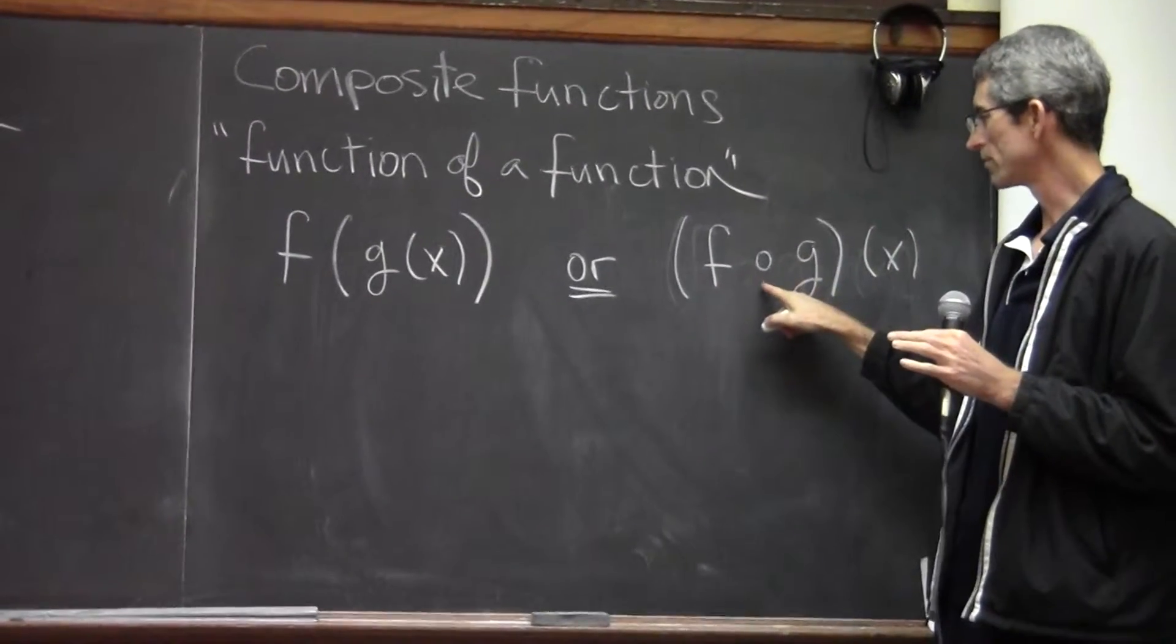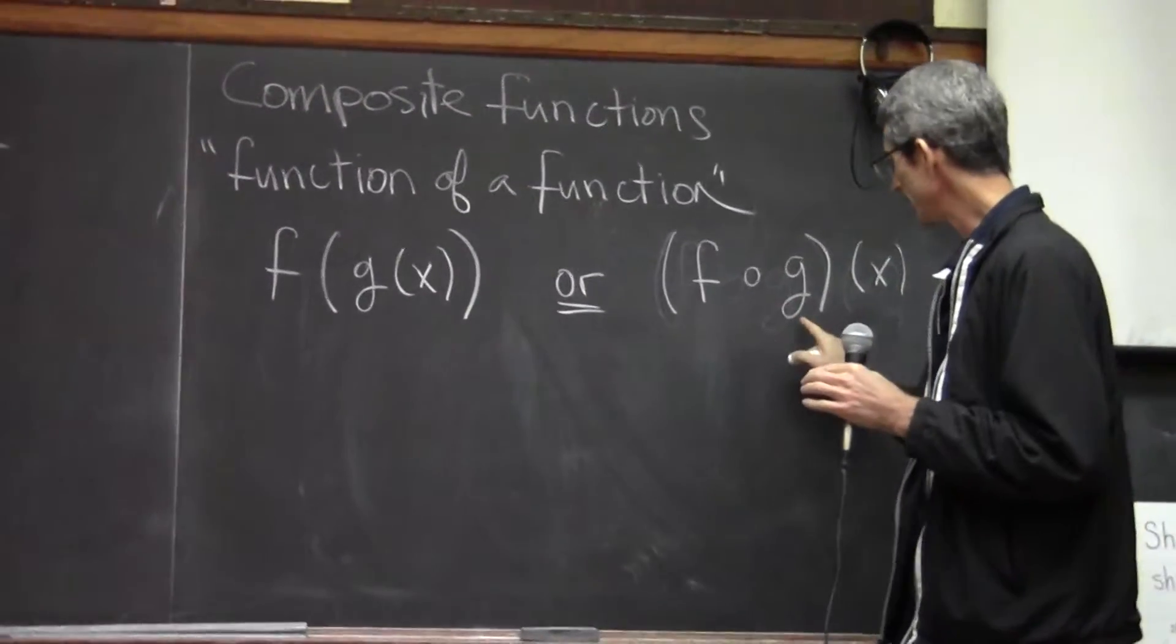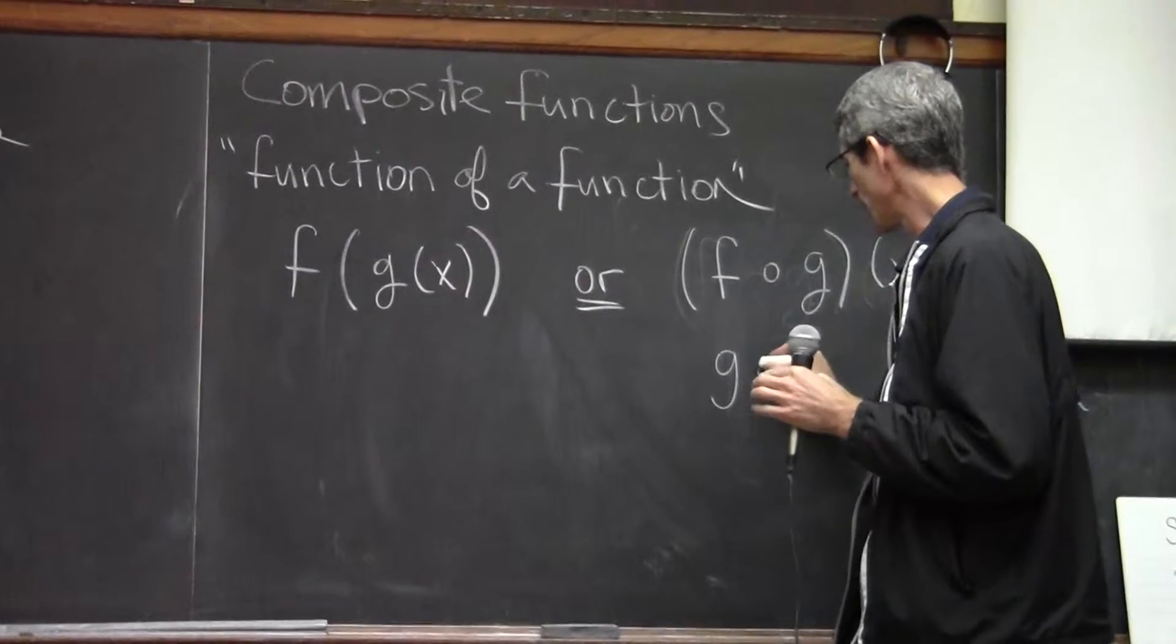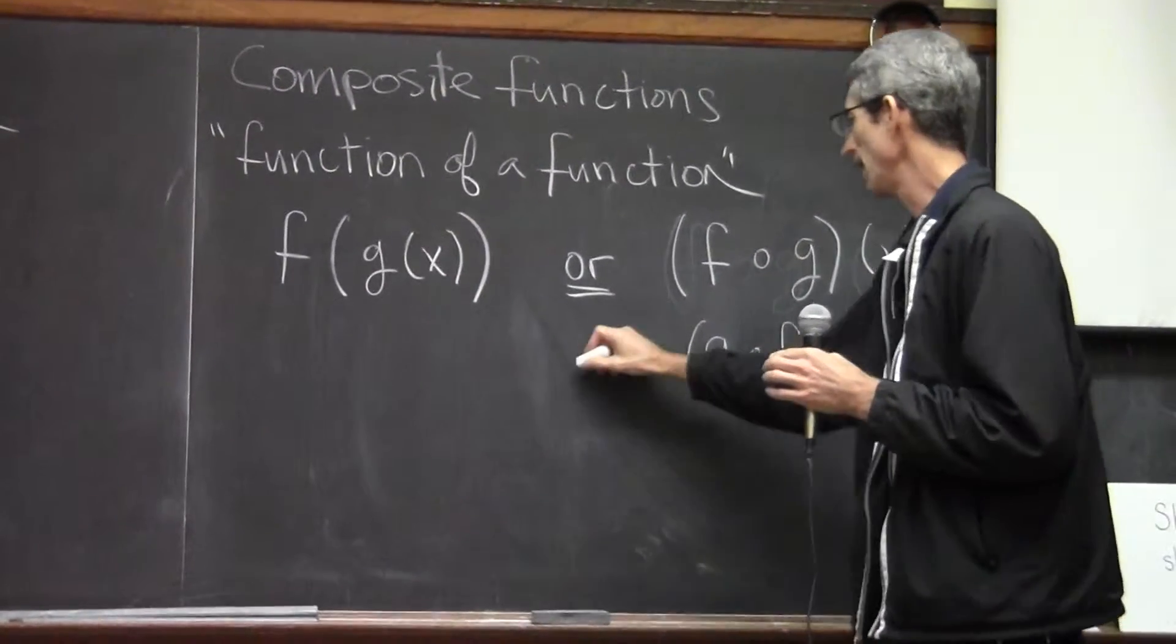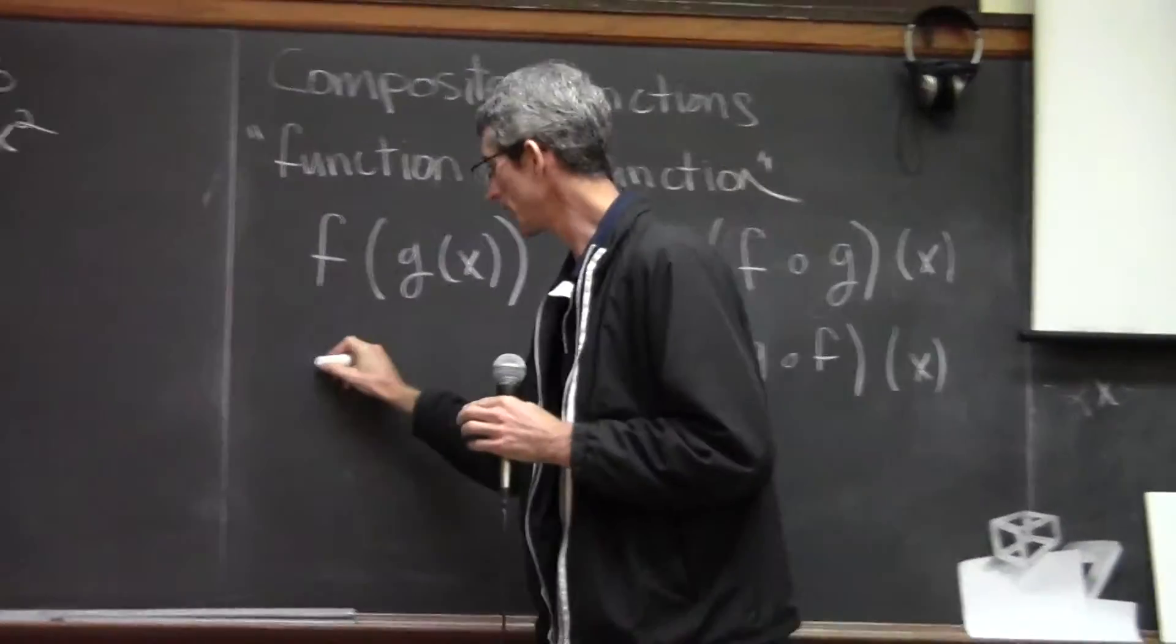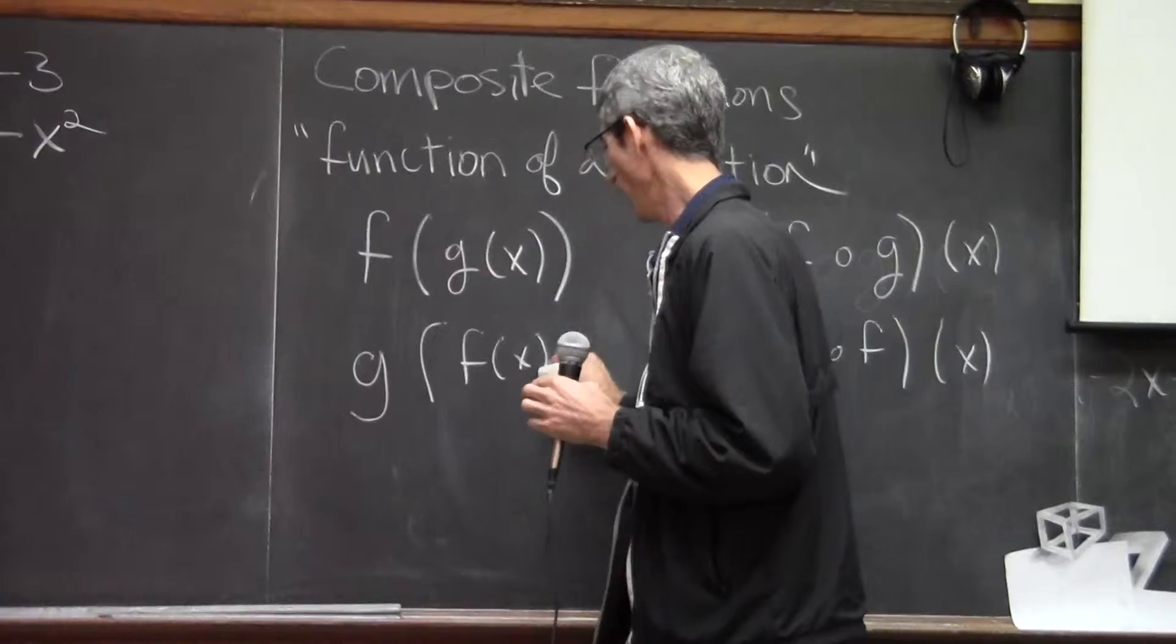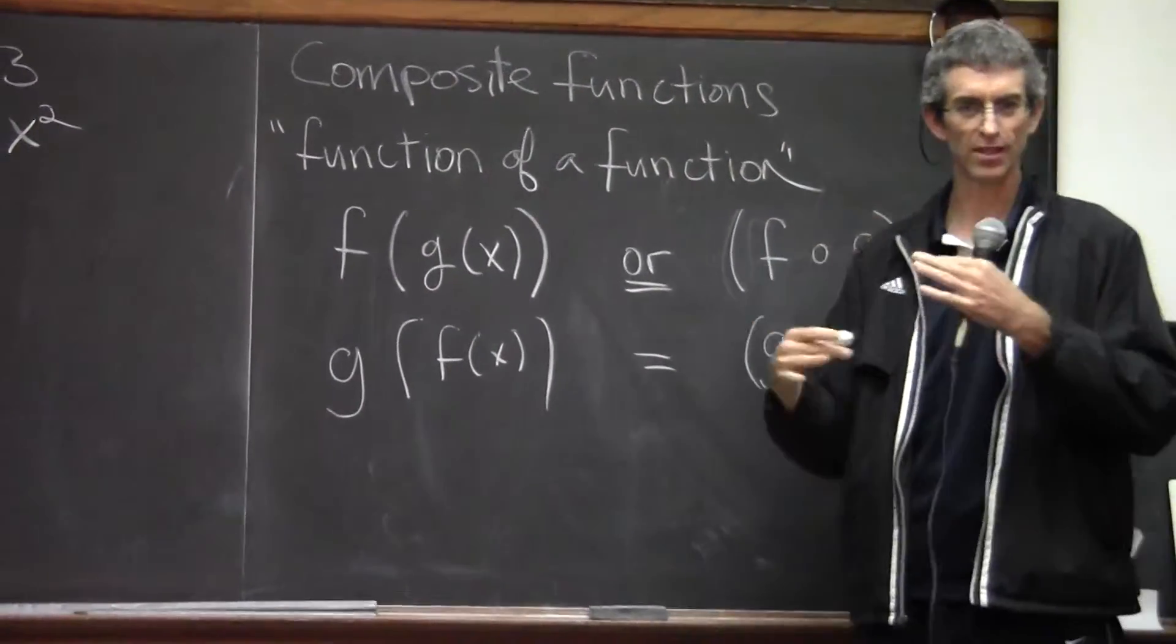When you see this notation what you have to remember is the second, whichever appears second, is the one that's inside. So that same way if I write it like this and you're going to have problems like that, that's going to mean g of f of x. So you just flip the order. So let's just do a couple of samples so you start to get the hang of this.